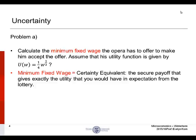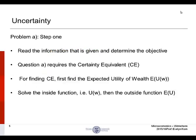First thing to notice is that minimum fixed wage is equivalent to the certainty equivalent. You can think of the certainty equivalent as the secure payoff that gives exactly the utility that one would have in expectation from the lottery. Step one: read the information given and determine the objective. Question A requires the certainty equivalent. For finding certainty equivalent, first find the expected utility of wealth. Solve the inside function, utility of wealth, and then the outside function, expected utility.